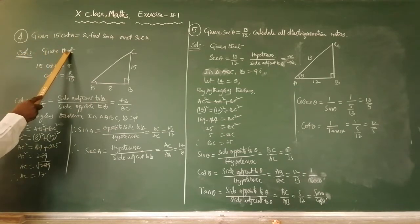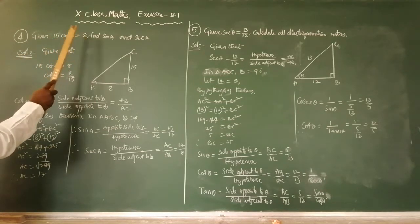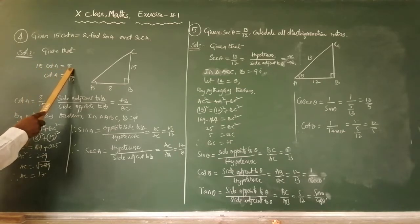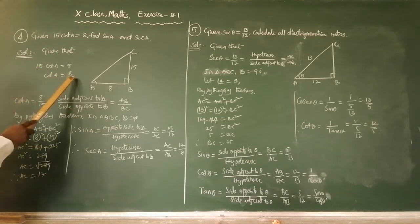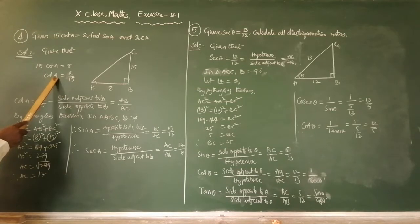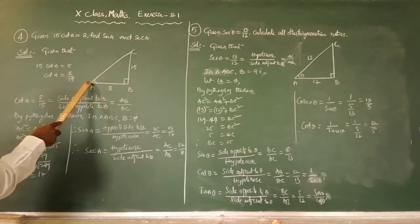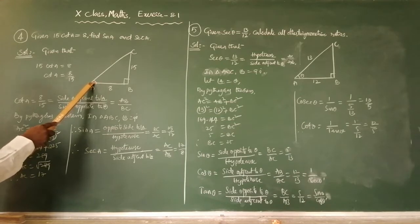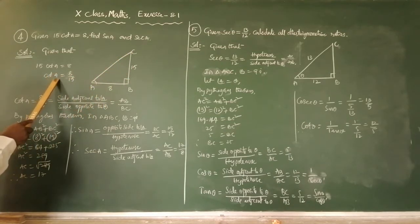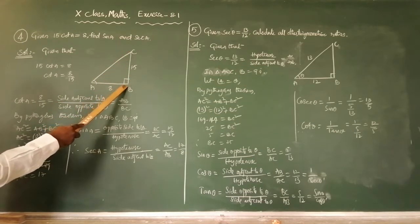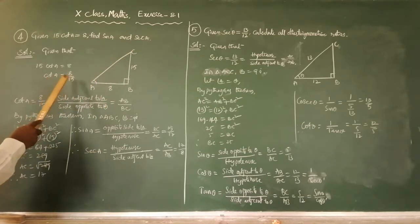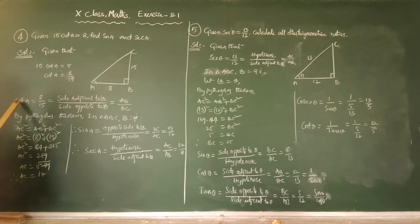Solution: given that 15 cot A equals 8, so cot A equals 8 by 15. Here 15 is the numerator — cot A equals 8 by 15. I'm going to draw a right angle triangle ABC, right angle at B, that is angle B equals 90 degrees. In triangle ABC, cot A equals 8 by 15.